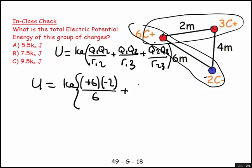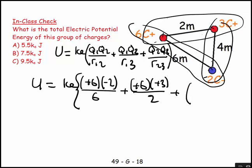Plus, let's do these top two. This is going to be a plus six times a plus three over a two. And then let's do the third one which is going to be this one down here.